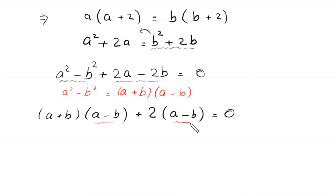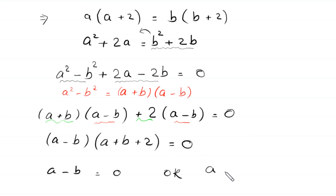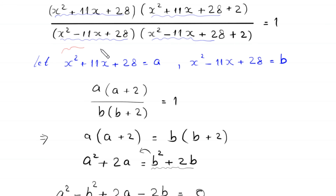We factor: a² - b² = (a+b)(a-b), and 2a - 2b = 2(a-b). So we get (a-b)(a+b) + 2(a-b) = 0. Factoring out the common factor (a-b): (a-b)(a+b+2) = 0. Therefore either a-b = 0 or a+b+2 = 0.